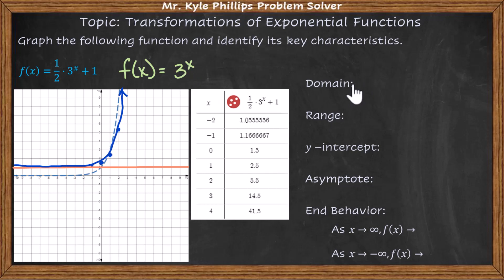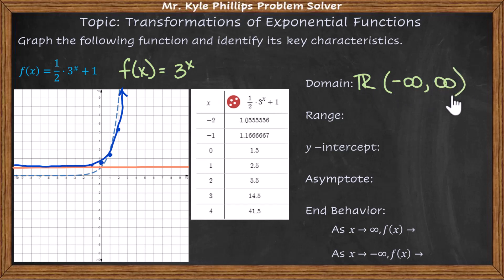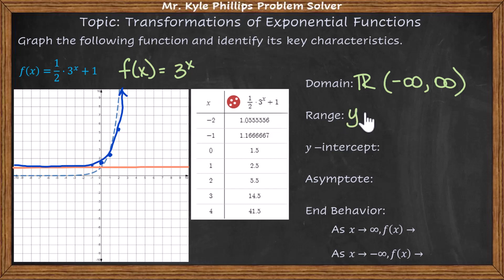Our domain is still going to be all real numbers. If you're using interval notation, we're going to say negative infinity to positive infinity. Our range — exponential functions move in one direction, meaning they move up or down. They do not go up and down both. Starting from the left, we are incredibly close to positive 1, but we are getting larger and larger as we move to the right. So our range here is going to be greater than 1, or in interval notation, 1 to positive infinity.